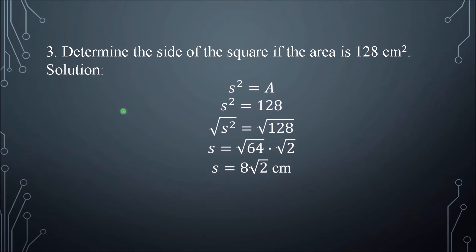Number 3. Determine the side of the square if the area is 128 cm². The formula for the area of a square is side squared. So side squared is equal to 128, which is the given area.